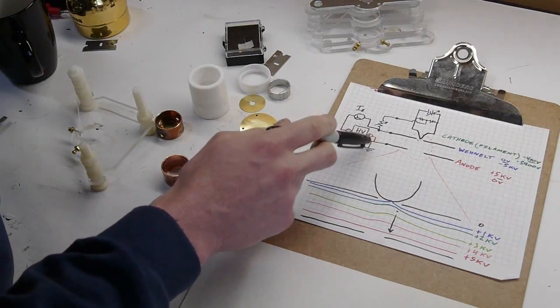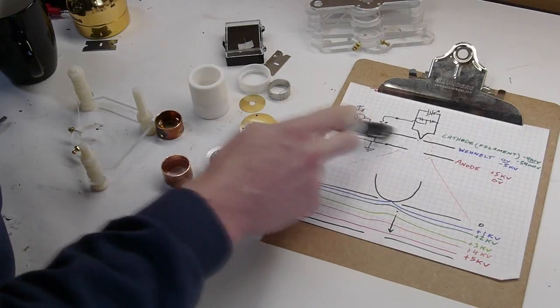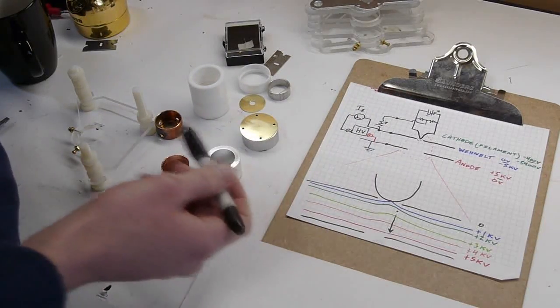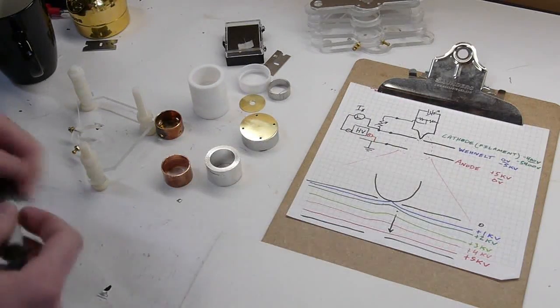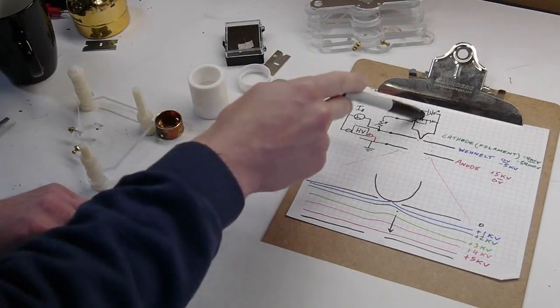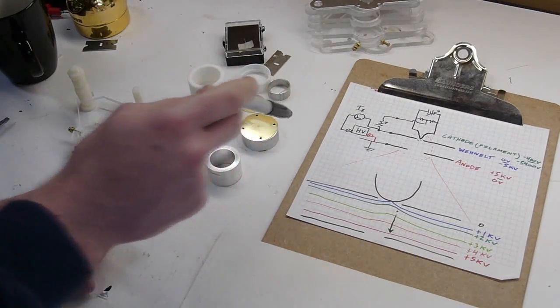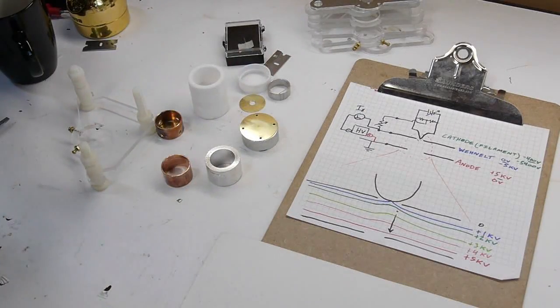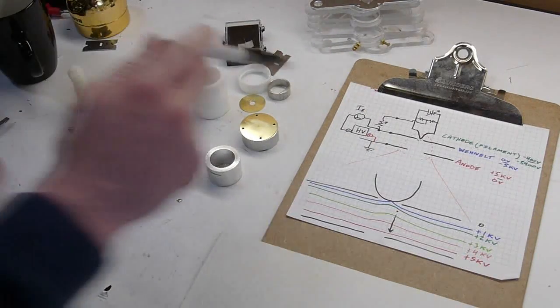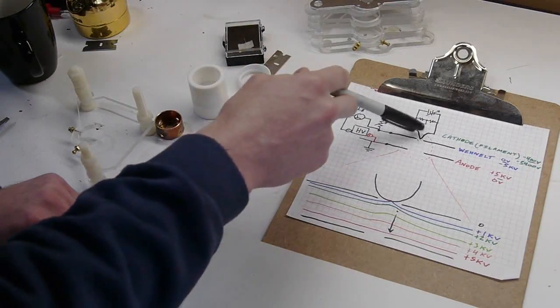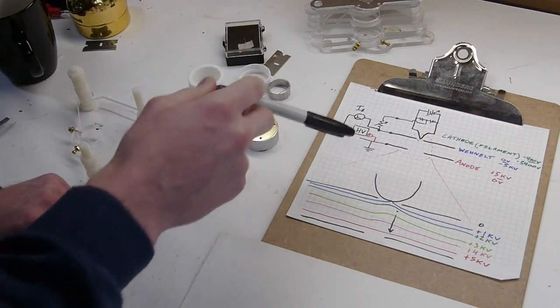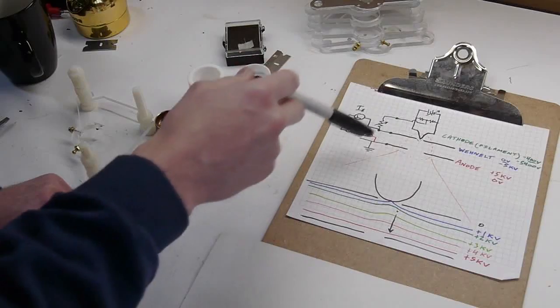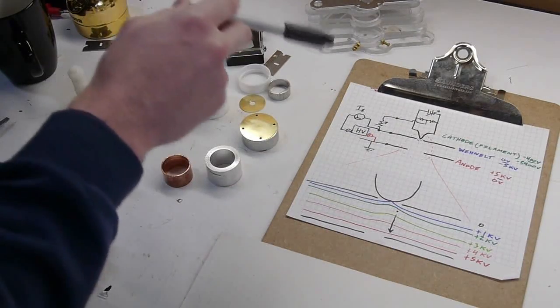So our high voltage supply is connected between the anode and the Wenelt and that's always some fixed value, like let's say five kilovolts. But what's the voltage on the cathode? In this case, this bias resistor sets up something known as automatic biasing. So as this gun is running and electrons are coming out of the filament, its potential is actually going negative... excuse me, positive.